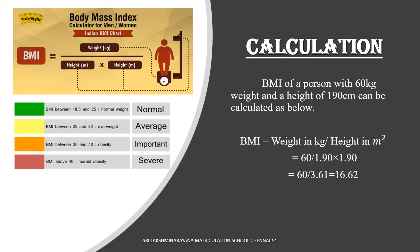Here is a sample BMI calculation for a person with 60 kg weight and 190 cm height. BMI equals weight in kg divided by height in meters squared: 60 divided by 1.90 into 1.90. Height is converted into meters, so 60 divided by 3.61. The BMI of this person is 16.62.